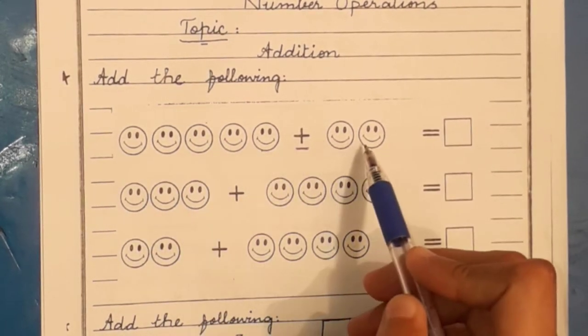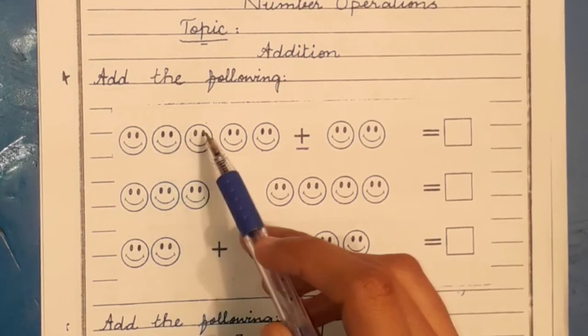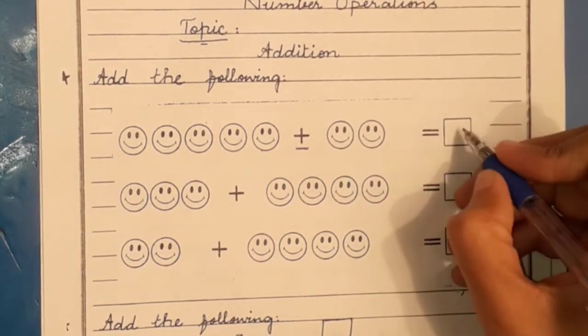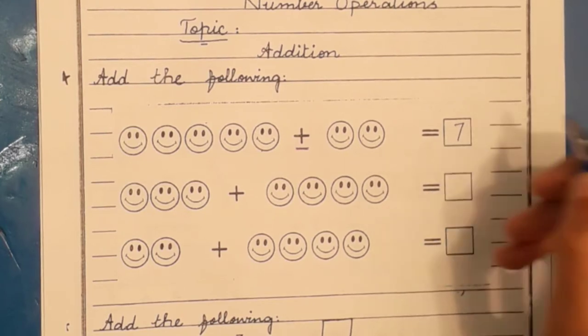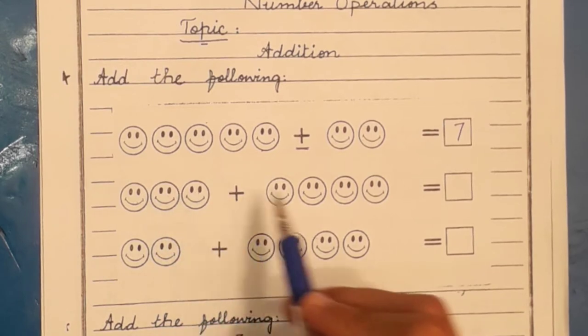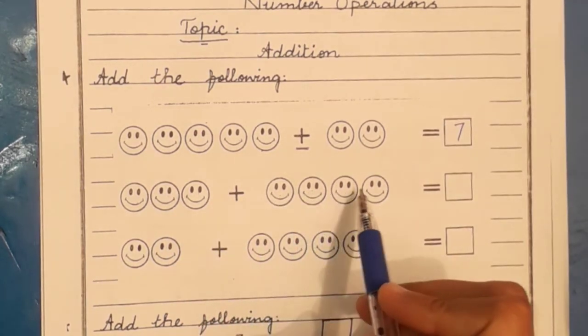We will count the smileys. One, two, three, four, five, six, seven. So there are seven smileys there. Now let's start. One, two, three, four, five, six, seven.